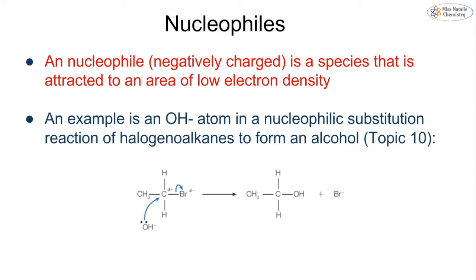Lastly, we look at nucleophiles. A nucleophile is the opposite of an electrophile. It's generally negatively charged and is attracted to an area of low electron density—looking for a positive or delta positive area. An example that we will see in topic 10 is when we have an OH⁻ ion, which contains a lone pair of electrons, attacking a center of carbon which is delta positive because it has a low electron density. In this case, our OH group is acting as a nucleophile.